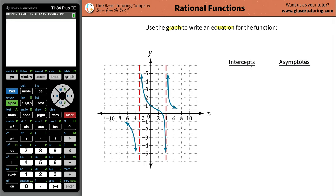So in order to use the graph, we need to understand two things about the graph. We have to understand the intercepts, where they are, what they are, and the asymptotes, again where they are and what they are.